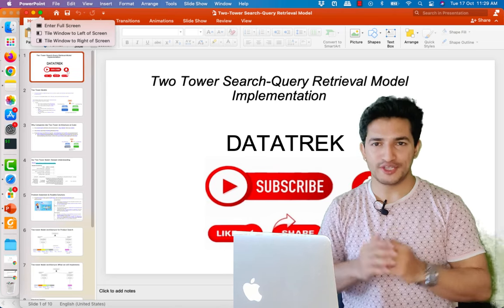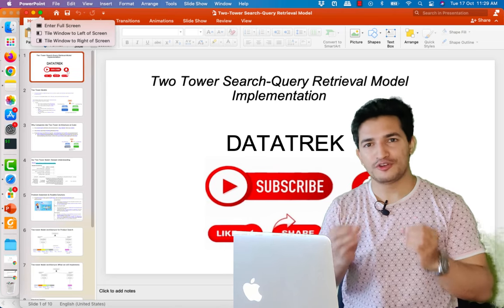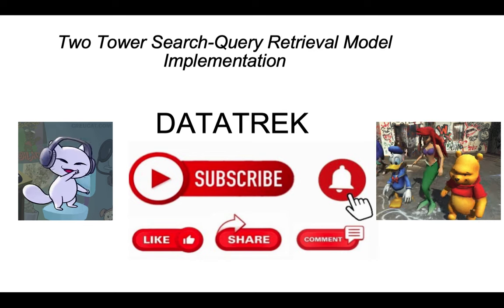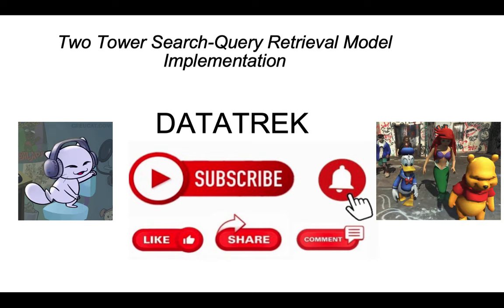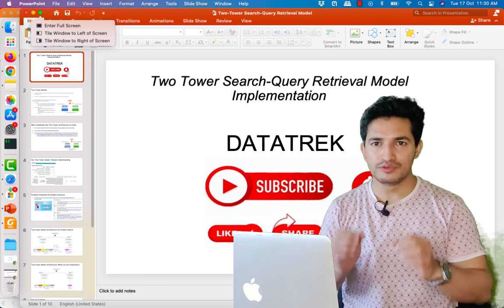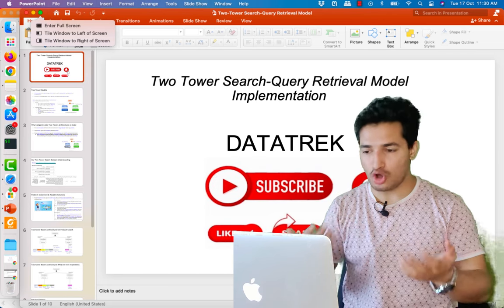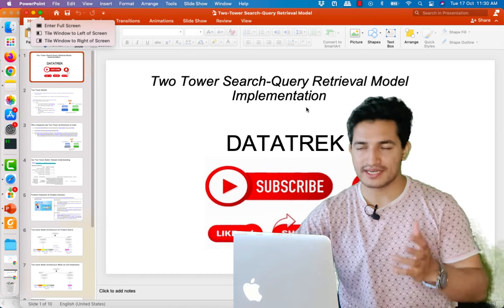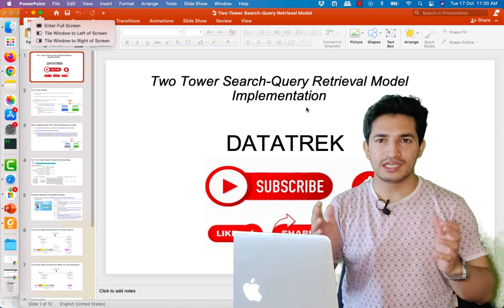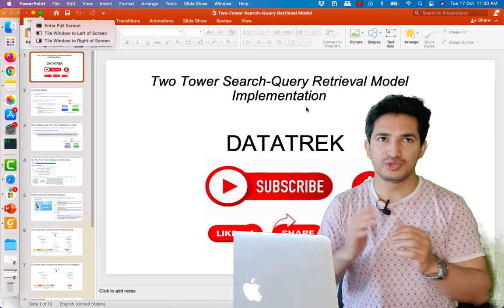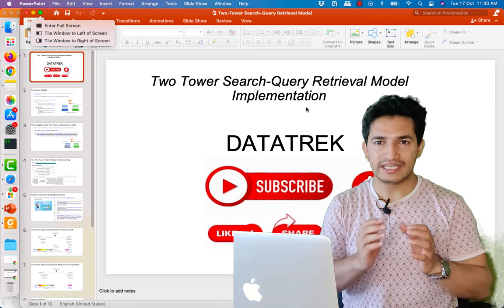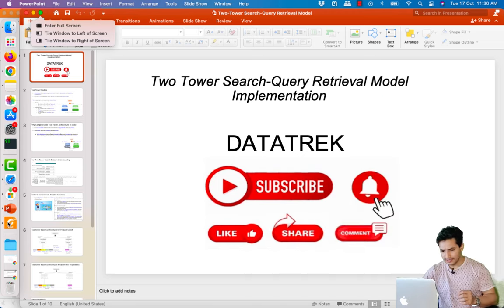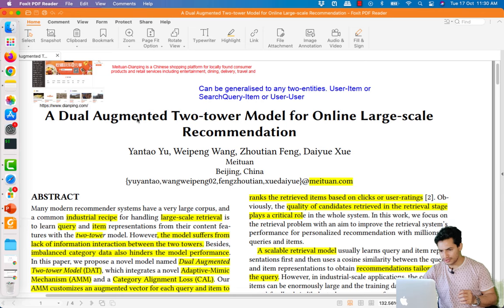Hey guys, welcome to Data Track, your one-stop channel for all the data science and machine learning updates. In today's video we will implement our own two-tower search query retrieval model from scratch. In recommendation systems, a retrieval model is used to retrieve relevant items out of millions of items.